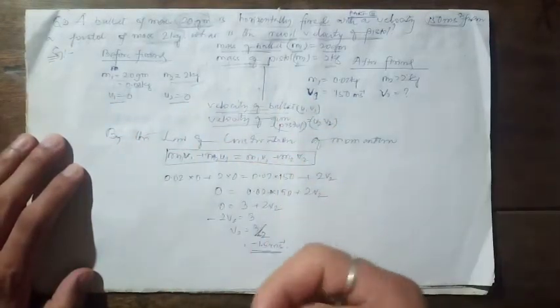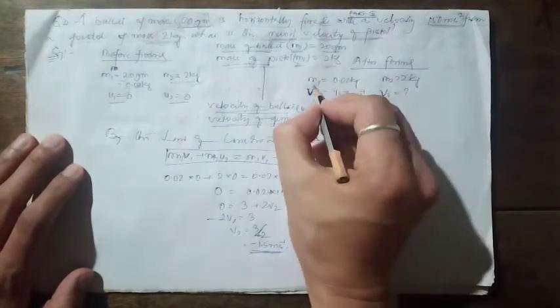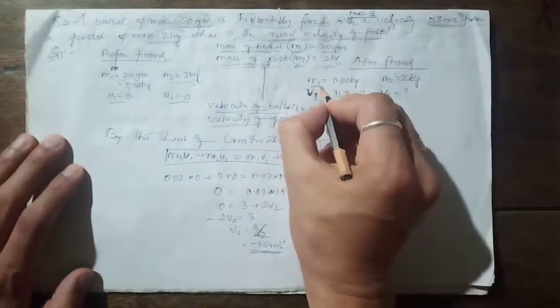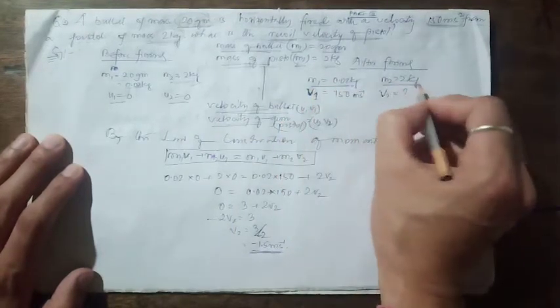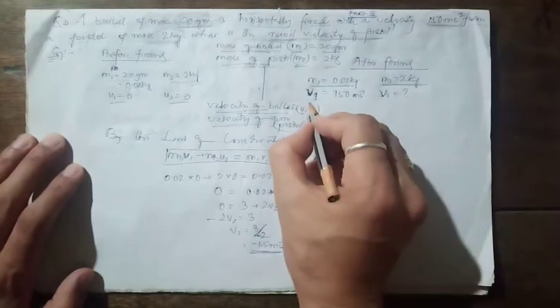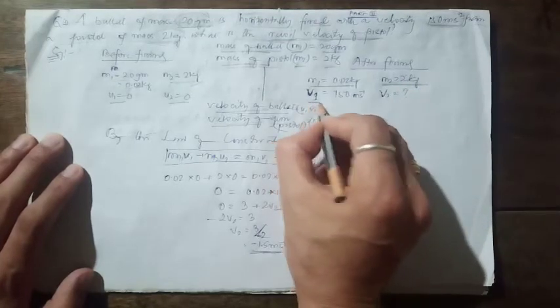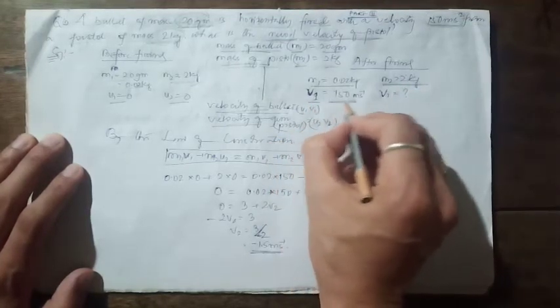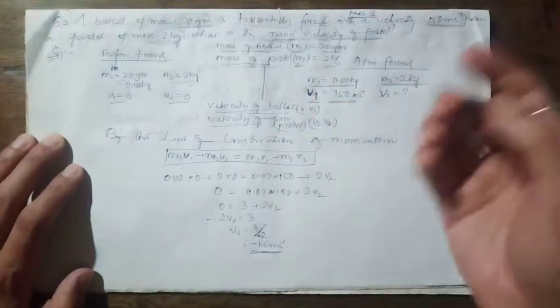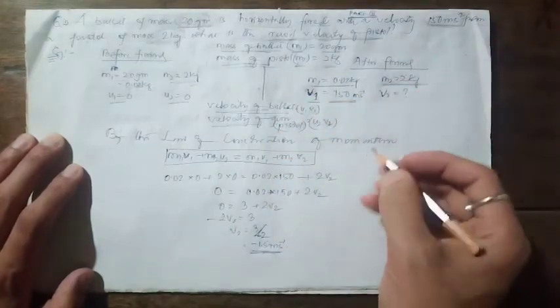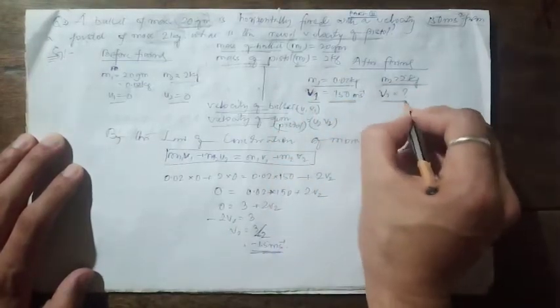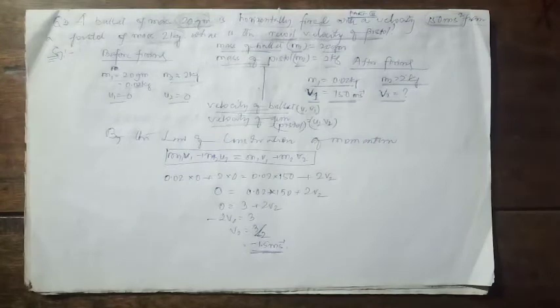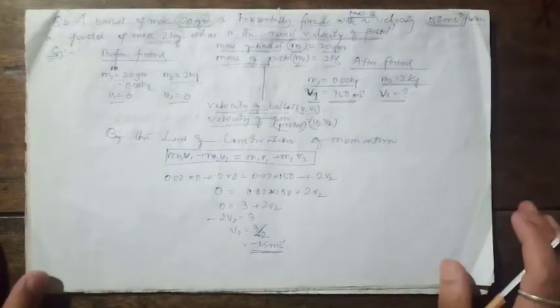After firing, the bullet moves forward with v1 = 150 m/s. We need to calculate v2, the recoil velocity of the gun. Using the law of conservation of momentum: m1u1 + m2u2 = m1v1 + m2v2.